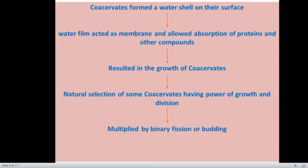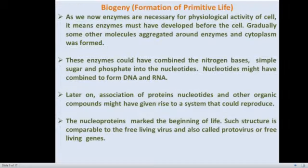This absorption of proteins and other compounds resulted in the growth of coacervates. Later on, some natural selection operated to select the coacervates having the power of growth and division. In this way, the selected coacervates underwent division and increased their number either by binary fission or budding. Thus, chemogeny resulted in the formation of a complex colloidal structure of various types of complex organic molecules, named as coacervates or microspheres.